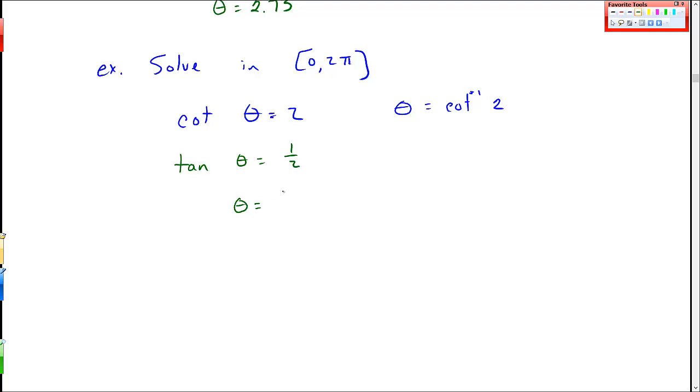And then you just have to be careful about what different things this might say on the unit circle. So theta equals tan inverse of 1/2. Let's see where that is. Tan inverse of 1/2, and my result will be in radians. So theta equals 0.46.